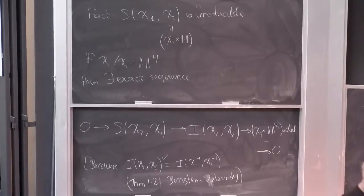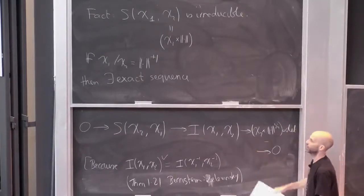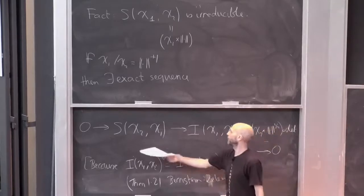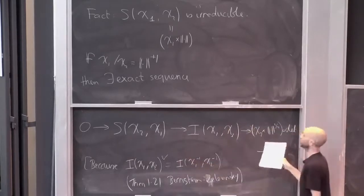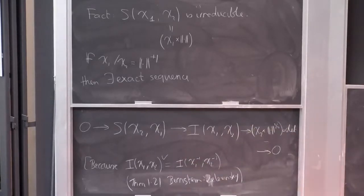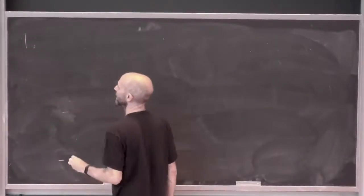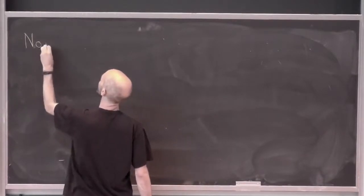So I've given you a whole host of random representations of GL₂(K): we've got I(χ₁, χ₂) if the ratio isn't plus or minus the norm, and if the ratio is plus or minus the norm we've got S and we've got one-dimensional representations. But here's a mind-blowing thing — there's another construction. Let me say essentially nothing about a completely different construction.